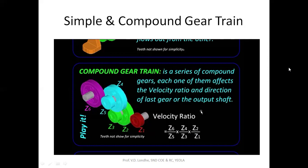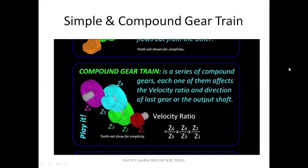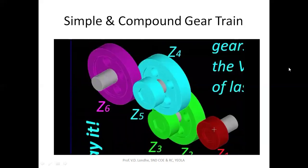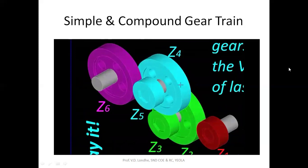In a compound gear train, a very large velocity ratio can be achieved. The velocity ratio is not just decided by the first and last gear — all intermediate gears contribute, as seen in terms Z2, Z3, Z4, Z5. The first gear rotates much faster than the last: the green one rotates a little slower, blue even slower, and the purple one is the slowest.